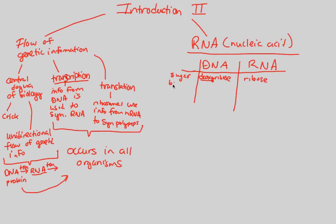What about the bases? The nitrogenous bases seen in DNA are A and G — which are the purines — and also C and T, which are the pyrimidines. In RNA we still have A, G, and C, but now we have a new base known as uracil, U. So T is replaced by U — the switch between T and U is our major difference in the nitrogenous bases.